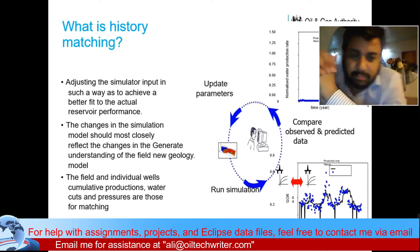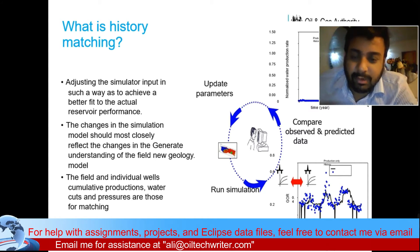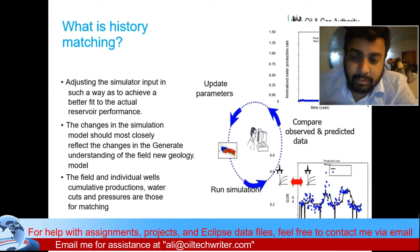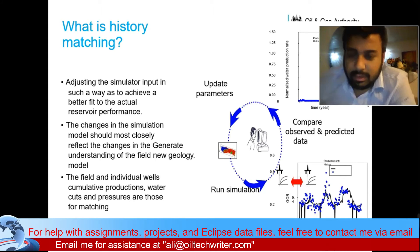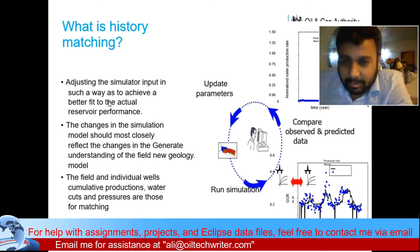Once you run your simulation and get results, you have to make sure the production rates match the real field performance. For example, if a well has produced 50,000 barrels in one year, your model must also show 50,000 barrels. If your model says 100,000 barrels, it is wrong. You must adjust parameters to correct errors and ensure simulated and real results match.